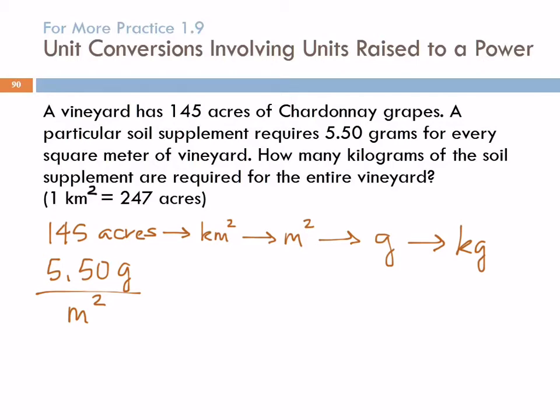We say we have one, two, three, four arrows. I'm going to have four conversion factors. I'm going to start with 145 acres, and I'm going to write four lines. Sorry about that, one, two, three, four. Acres, square kilometers, square meters, grams, kilograms, just copy them down.